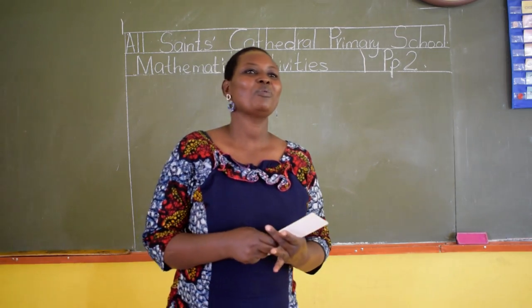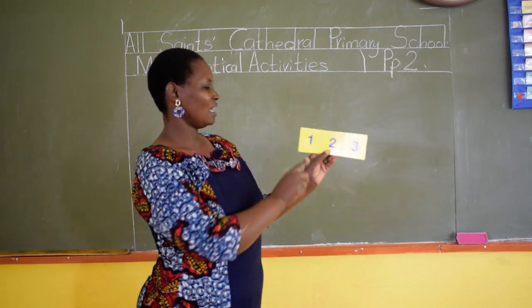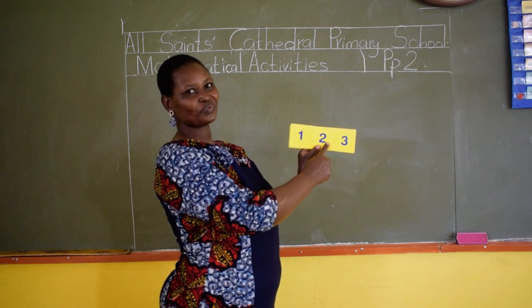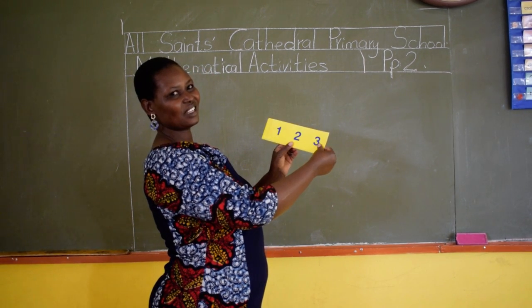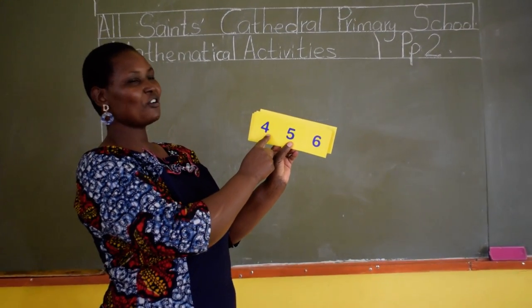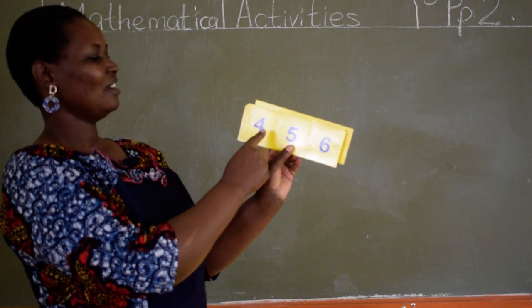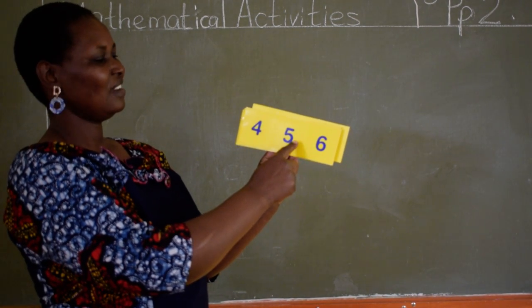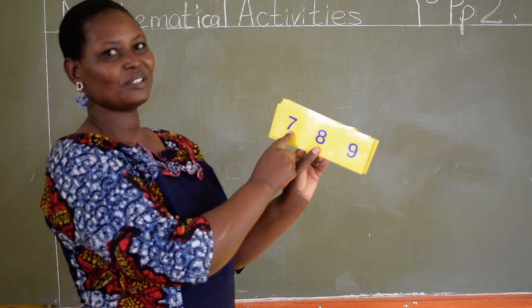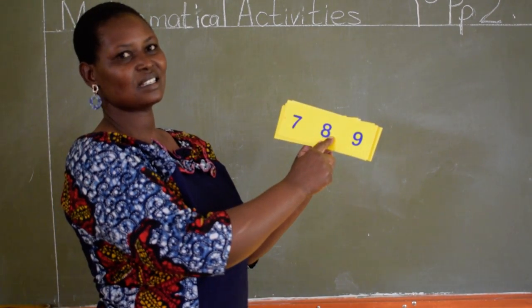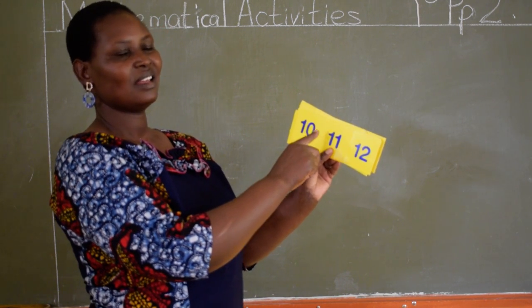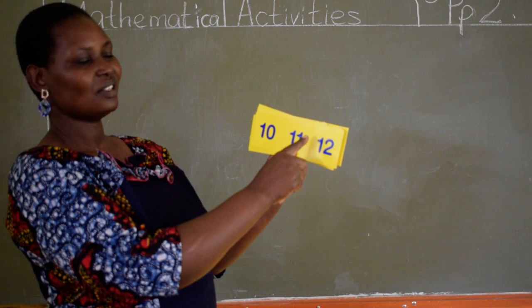Now we are going to continue counting numbers. Can you say 1, 2, 3, 4? You are not counting. Say 4. I can't hear you. 5, 6, 7, 8, 9, 10, 11, 12.